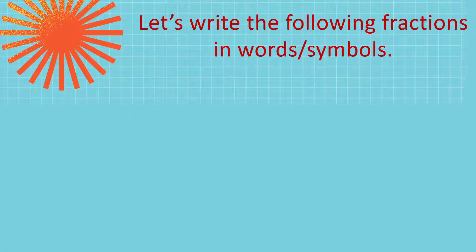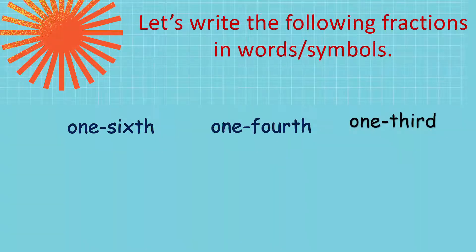So, let's practice. Let's write the following fractions in words and in symbols. So, that is written in words. So, we're going to write that in symbols. So, 1 sixth. So, 1. And then, the fraction bar. And then, 6, the denominator. 1 fourth. That's how we write 1 fourth. And then, 1 third. So, children, what do you notice when you write the denominator? Very good. It's written in like an ordinal number. 6 with the TH. 4 with the TH. 3rd with the RD. The position. Remember, ordinal numbers. So, we write it that way.